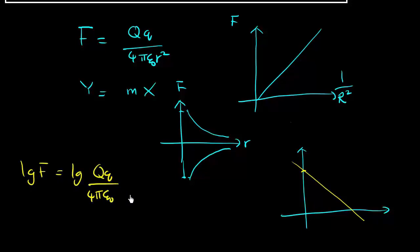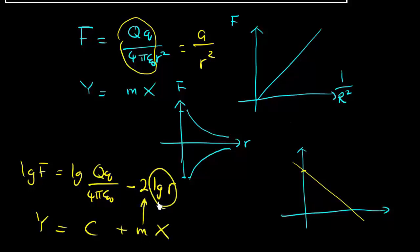Very simple. Log both sides. You log F equals log Qq over 4πε₀ minus 2 log r. Why so? Because you see this is a constant, right? Just like a over r². How do you log F equals a over r²? Log F equals log a minus 2 log r. So this is y, this is c, this is mx. The m is minus 2, the log r is the x-axis, the log F is the y-axis. The y-intercept is this.